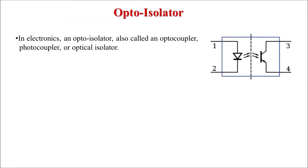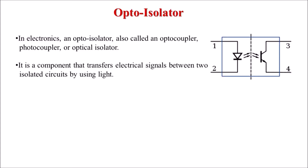An optoisolator is also called an optocoupler, photocoupler, or optical isolator. It transfers electrical signals between two isolated circuits by using light. As shown in this diagram, an LED is used for transmission, and this light is captured by a photodiode or phototransistor at the receiver side. Because transmission is through light, there is proper isolation between a high power circuit and a low power circuit.